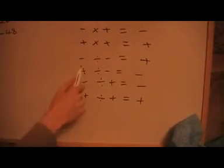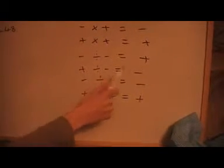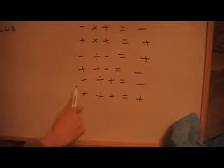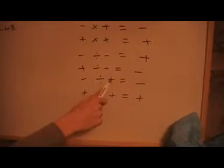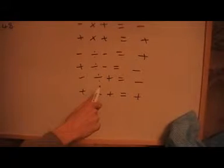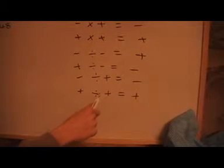Now we're going to talk about dividing negative numbers. Here's the rule: if we've got a negative divided by a negative, it's plus. If we've got a plus divided by a negative, it's negative. A negative divided by a plus is negative. And a plus divided by a plus is positive.